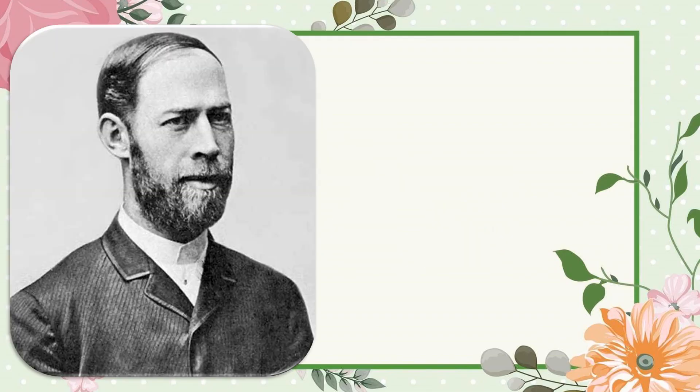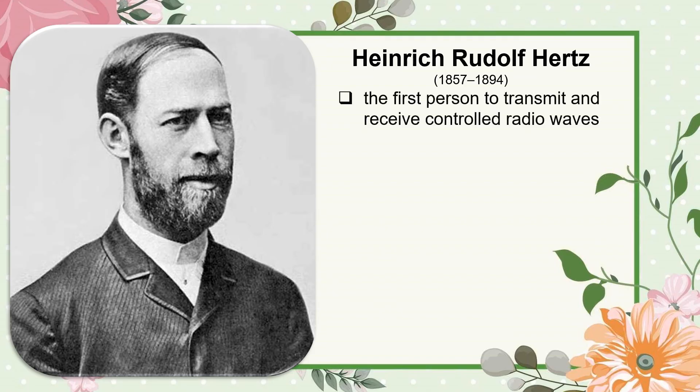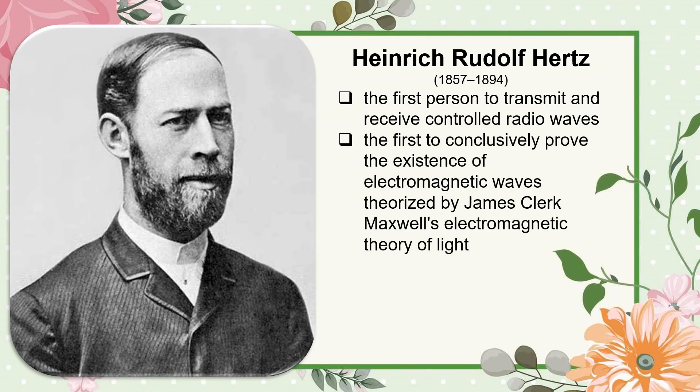Heinrich Rudolf Hertz (1857–1894) was a German physicist who became the first person to transmit and receive controlled radio waves. He was the first to conclusively prove the existence of electromagnetic waves theorized by James Clerk Maxwell's electromagnetic theory of light.